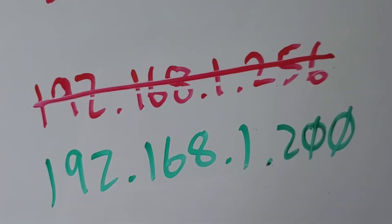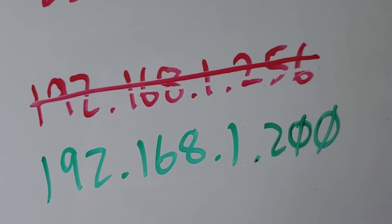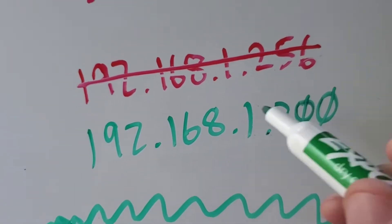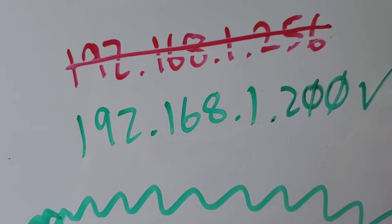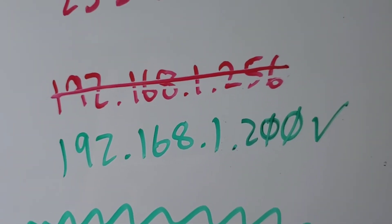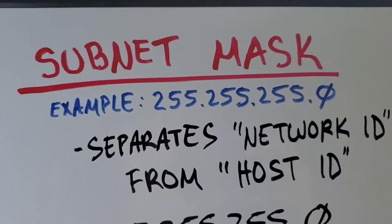However, 192.168.1.200 — all of those octets are within zero to 255, so that is a valid IP address.